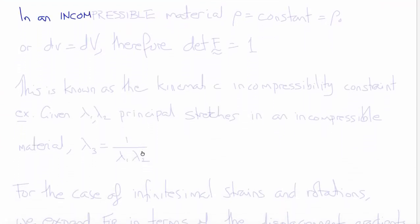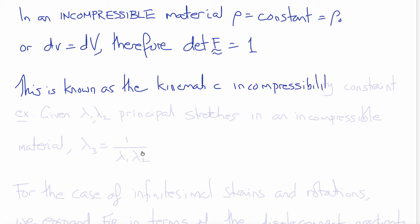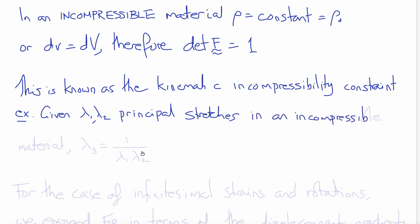If a material is incompressible, that means its density is constant and material volumes don't change, so ρ = ρ₀, or dv equals dV. Therefore conservation of mass states that det(F) = 1 for an incompressible continuum. This is sometimes known as the kinematic incompressibility constraint. For example, given λ₁ and λ₂ as principal stretches in an incompressible material, we can use this constraint to show that λ₃ must be 1/(λ₁ · λ₂).